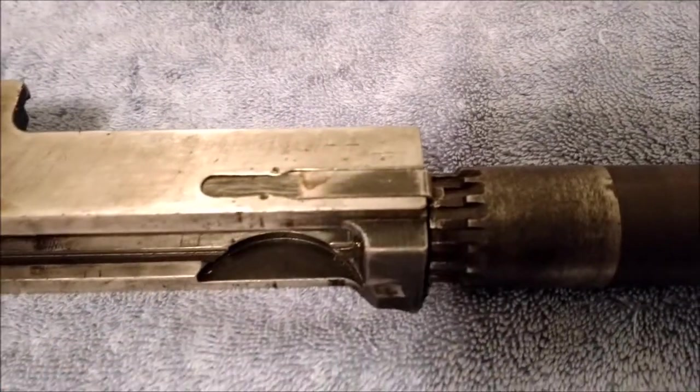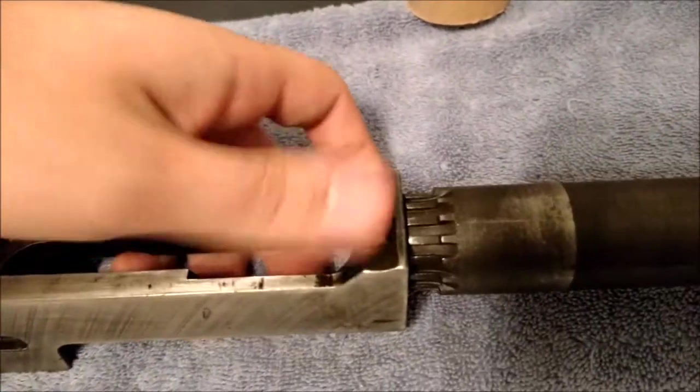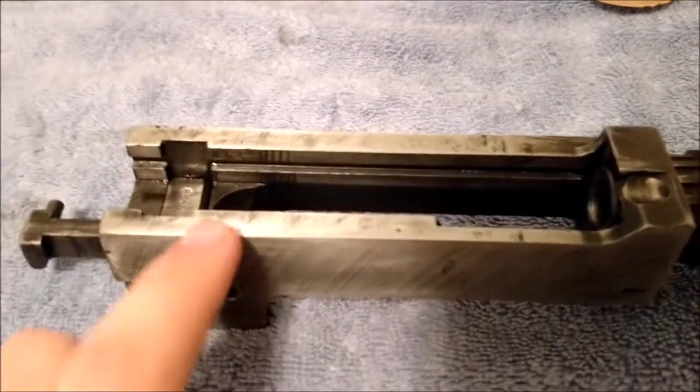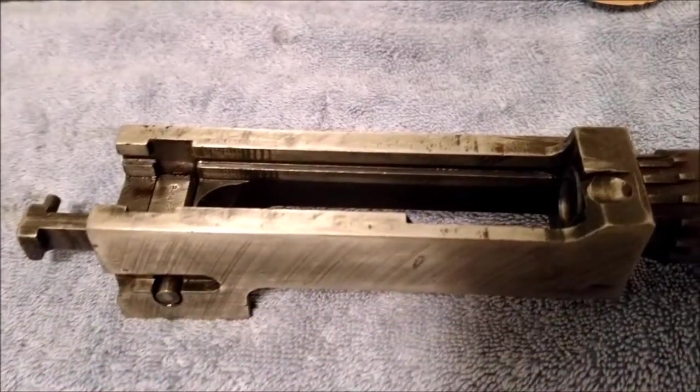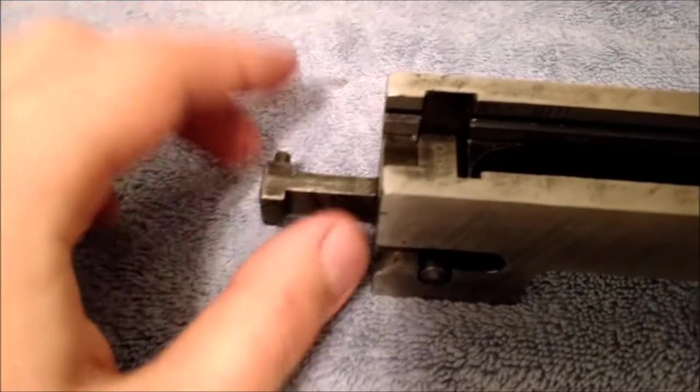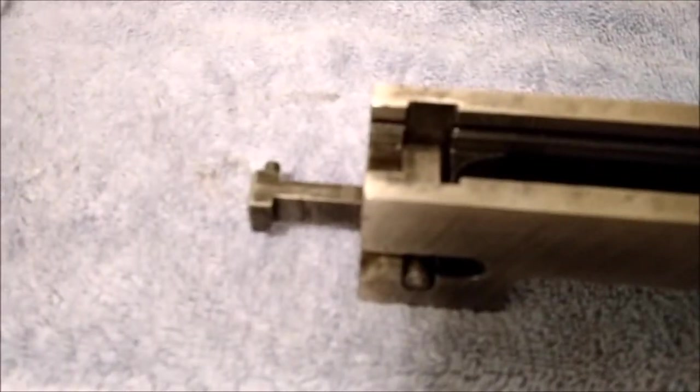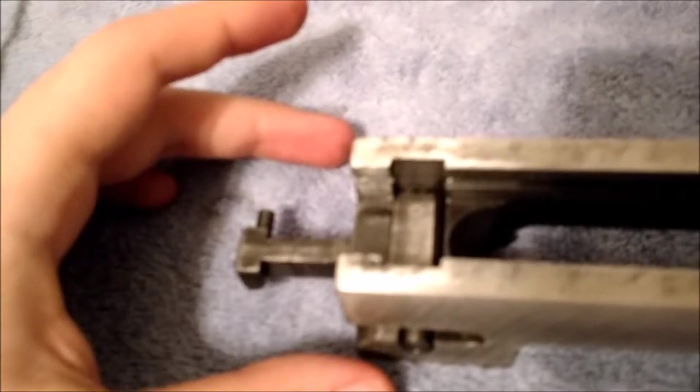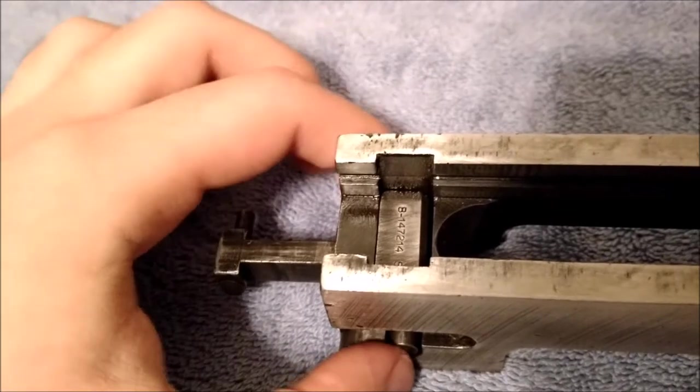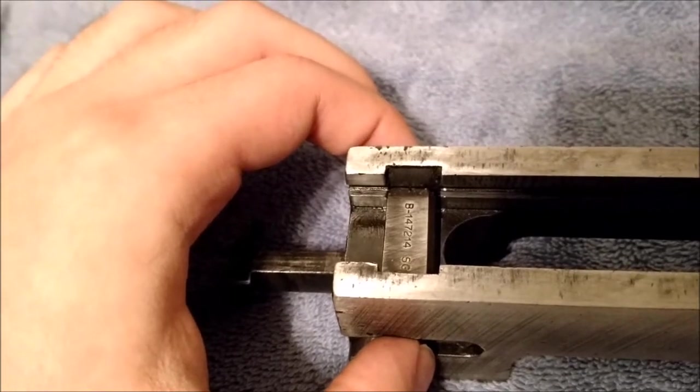Now the Israeli ones are sort of squared off, as well as the spring. All the American ones are rounded. That's just one little difference. You can see the track that the bolt rides in, you can also see the lug for the accelerator to coil around.